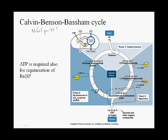Glyceraldehyde 3-phosphate is also formed during glycolysis from fructose 1,6-bisphosphate — it's the first compound formed immediately after splitting glucose into two. And this is actually a very high energy compound.